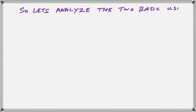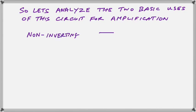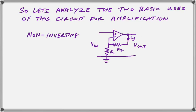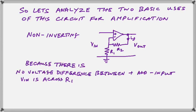So let's analyze the two basic uses or configurations of this circuit when used for amplification. There is your non-inverting circuit. That means that the input is fed to the plus input of the op-amp and the output is just a larger copy of the input. Because there is no voltage difference between these inputs, the VIN voltage is also across the minus input, which means it is across R1.